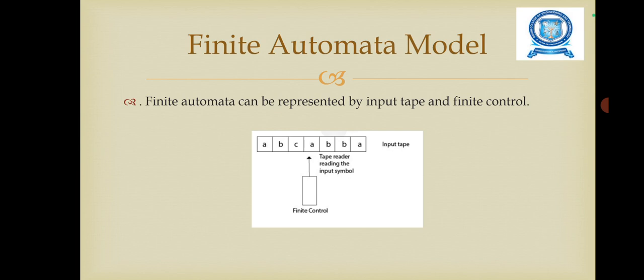Next we are going to see the finite automata model. It can be represented by input tape and finite control. The input tape is a linear tape having some number of symbols. Each input symbol is placed in each cell. The finite control decides the next state on receiving particular input from the input tape. It reads the cells one by one from left to right, and at a time only one input symbol is read.